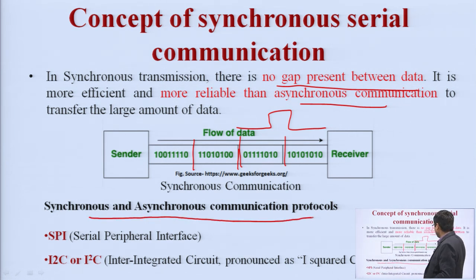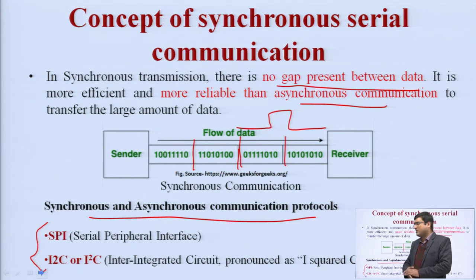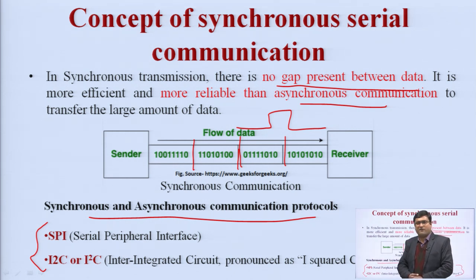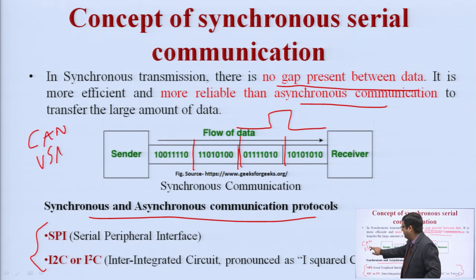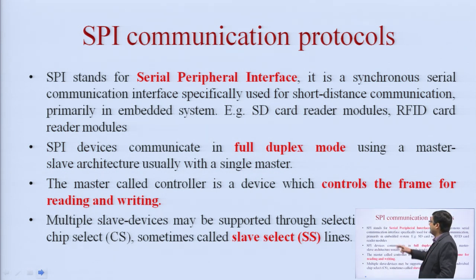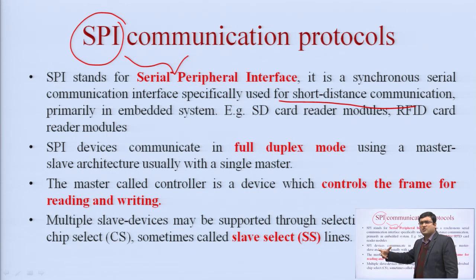Synchronous and asynchronous communication protocols can be further divided. In our syllabus, we will study two communication protocols: SPI (serial peripheral interface) and I2C (inter-integrated circuit, pronounced I-squared-C). Other synchronous communication protocols available include CAN, CANBUS, USART, RS-232, and SATA, but in our subject we will study only SPI and I2C. Let us start with the SPI communication protocol. SPI stands for serial peripheral interface.